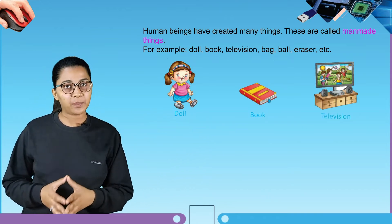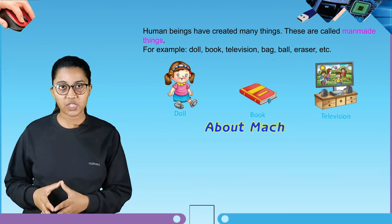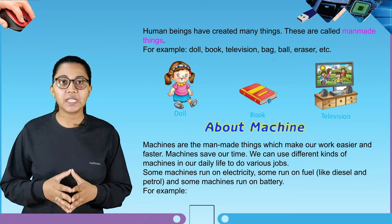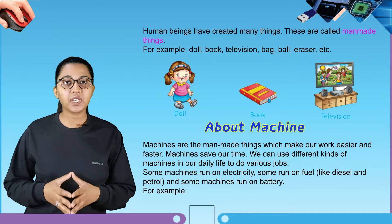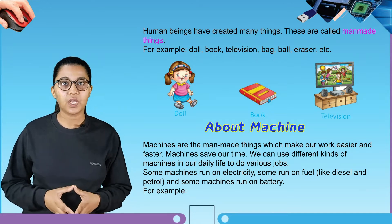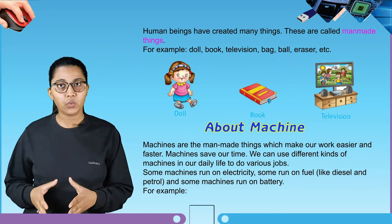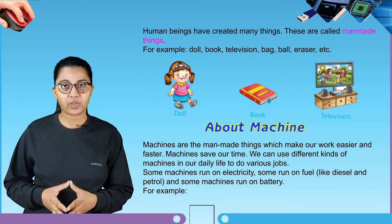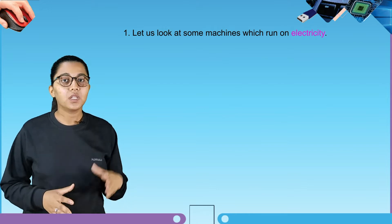Our next topic is about machines. Machines are man-made things which make our work easier and faster. Machines save our time. We can use different kinds of machines in our daily life to do various jobs. Some machines run on electricity, some run on fuel like diesel and petrol, and some machines run on battery.